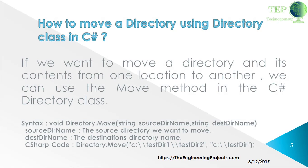If we want to move a directory and its content from one location to another, we can use the Move method in the C# Directory class. The syntax is: Directory.Move() with the first argument being the source path you want to move, and then after a comma, the destination path where you want to move the directory.